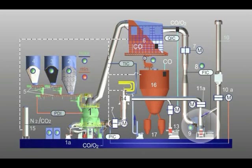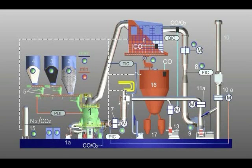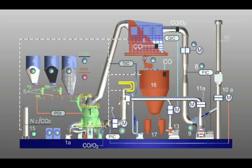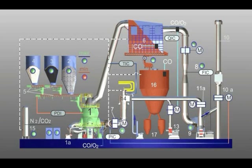The process gas fan, position 9, is started up and operated with a minimum volume flow. The plant is inertized by feeding in nitrogen or carbon dioxide from the corresponding dispensing vessel, position 15.